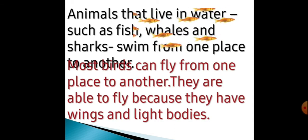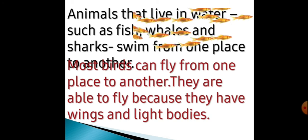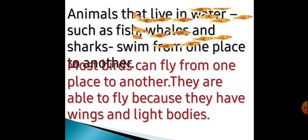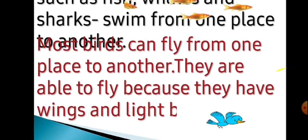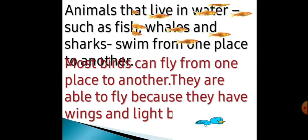Most birds can fly from one place to another. They are able to fly because they have wings and light bodies. Matlab jo most of birds hote hain, woh ek jagah se doosri jagah par jaane ke liye fly karke jaate hain. Kyunki unke paas wings hote hain aur light body, matlab halka sa body hota hai. Dekho yeh bird apne wings se fly kar rahi hai, waise hi sab birds apne wings se fly karke ek jagah se doosri jagah ja sakte hain.